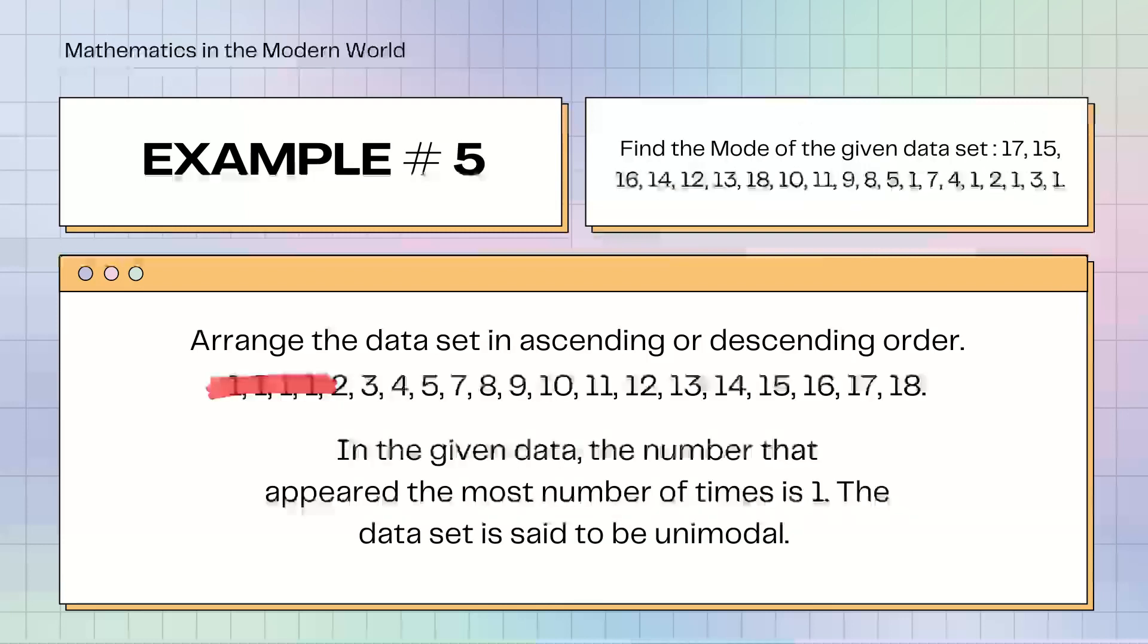Example number 5. Find the mode of the given dataset: 17, 15, 16, 14, 12, 13, 18, 10, 11, 9, 8, 5, 1, 7, 4, 1, 2, 1, 3, 1. Arrange the dataset in ascending or descending order.